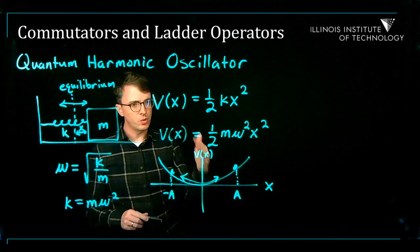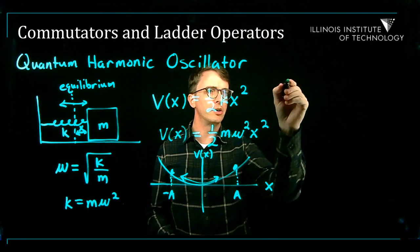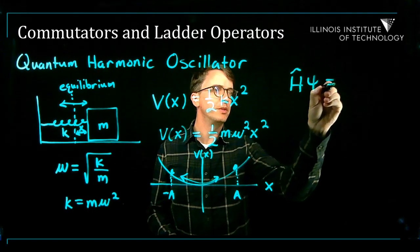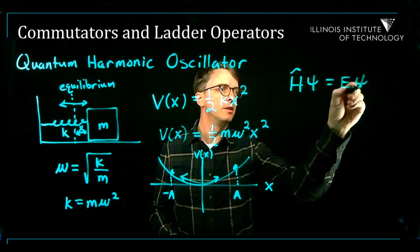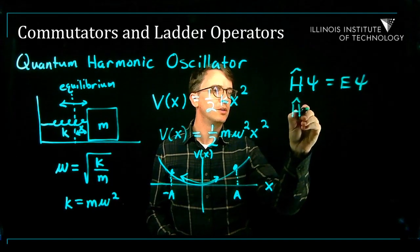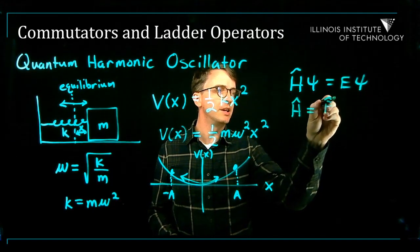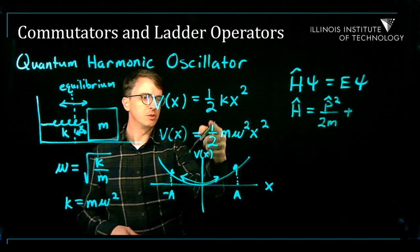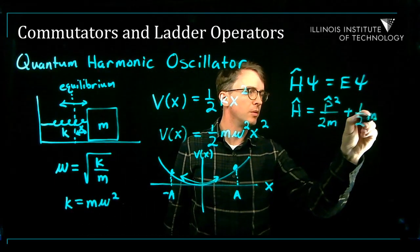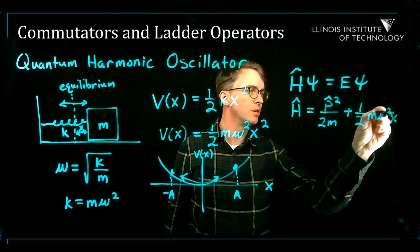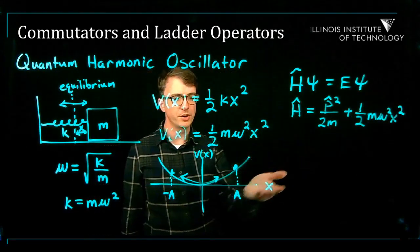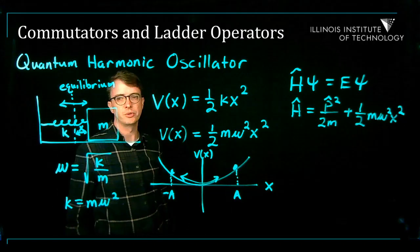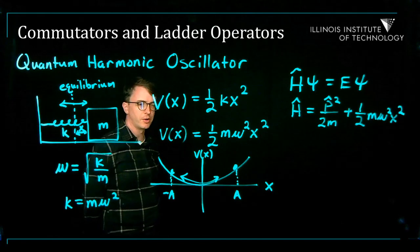If we want to do the quantum mechanical version of this system, we need to solve the time-independent Schrödinger equation: H-hat psi equals E times psi. H-hat will be the kinetic energy p-hat squared over 2m, plus the potential energy one-half m omega squared x squared. We want to know the allowed energies for a quantum particle experiencing this spring-like potential.